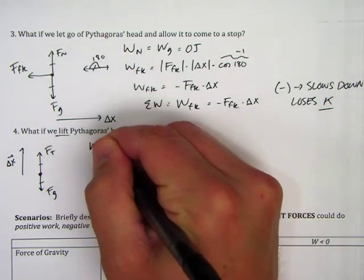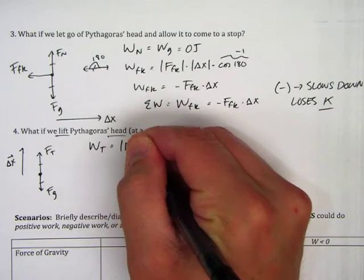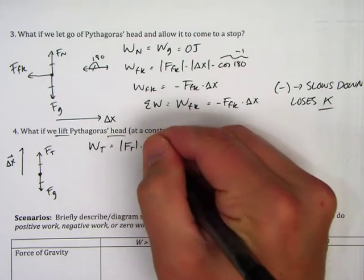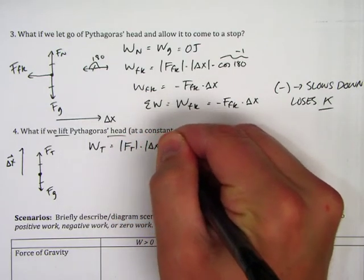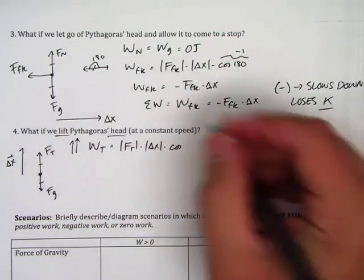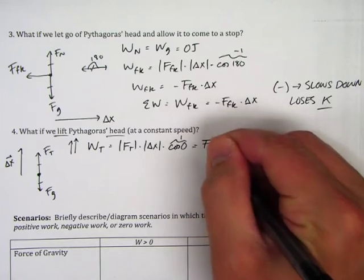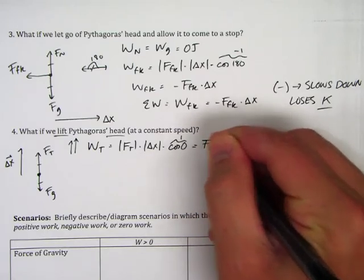So the work done by tension will be the force of tension times the displacement times the cosine of the angle in between these two, and these two are parallel. So it's a cosine of zero, which is one. So it's just FT times delta X positive.